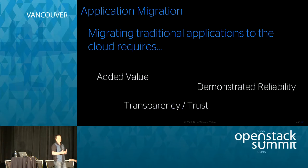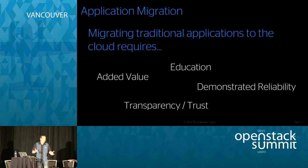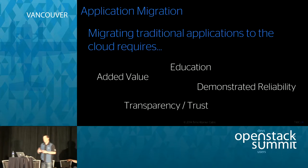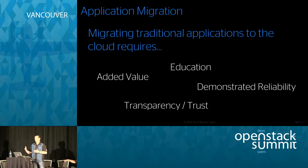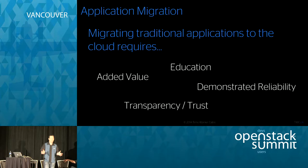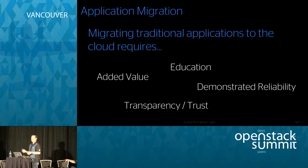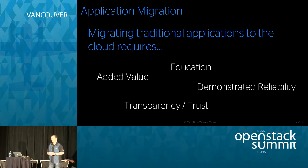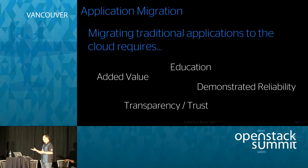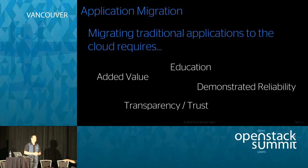Looking at application migration — we have a lot of traditional applications migrating to the cloud. We also took this cloud without a mandate that you have to move to it, so there was no stick, only carrots. These carrots — speed, agility — aren't well known from a traditional enterprise perspective, so you have to do a lot of education. There's a lot of concern about reliability of the system, so you need to demonstrate that it is reliable, and then there's a transparency component.